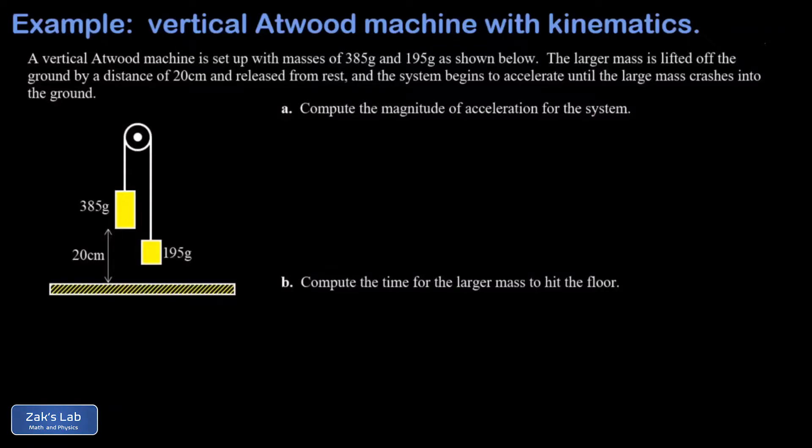In this video we're solving a vertical Atwood machine. In part A we're going to find the acceleration of the system, and then part B is a kinematics question where we're going to find out exactly how long it takes the heavier mass to hit the ground. Finding the acceleration and knowing the distance that it has to travel, we can apply our one-dimensional kinematics equations to get part B done.